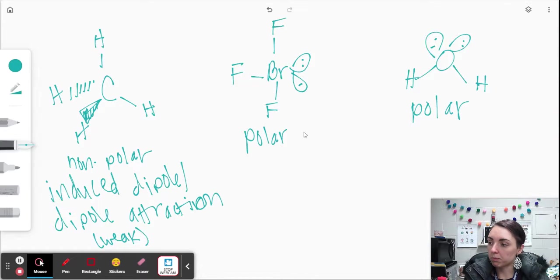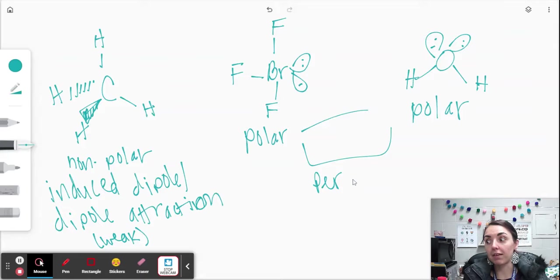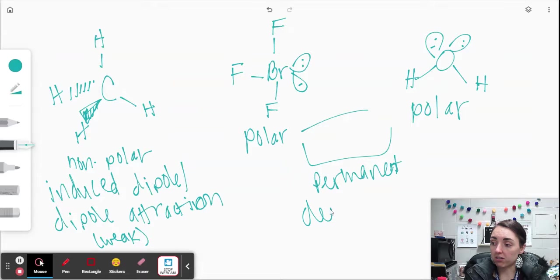So then these two are polar, but they're a little bit different. So in all polar molecules, we're going to have permanent dipoles, meaning one side's definitely positive and one side is definitely negative. So that's going to create a strong attraction, permanent dipole-dipole attractions. So those are pretty strong.